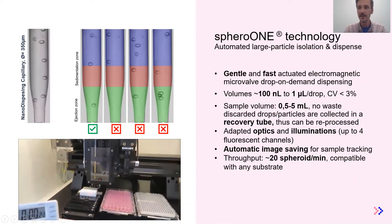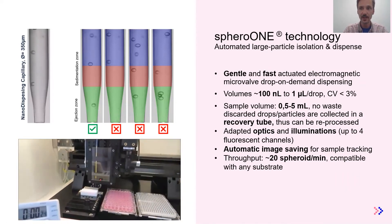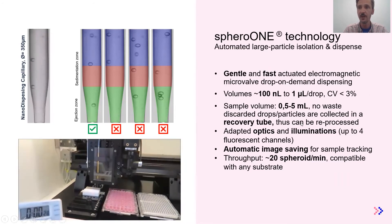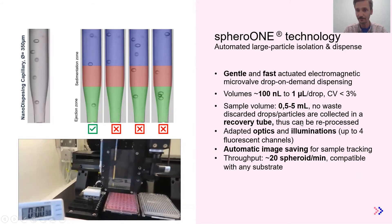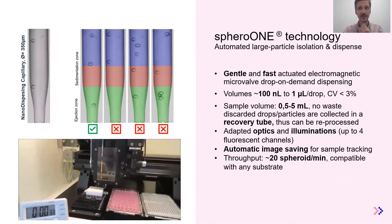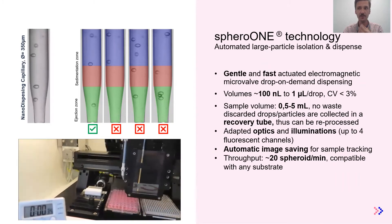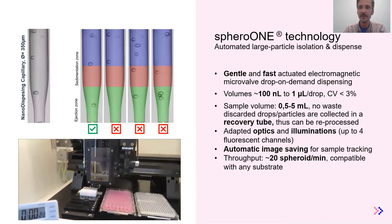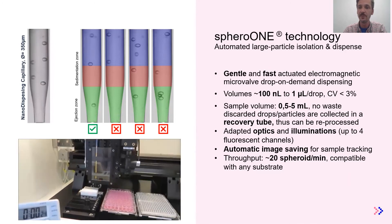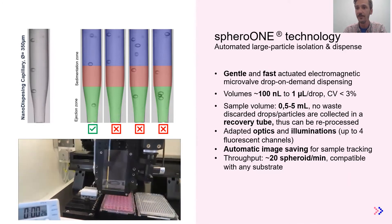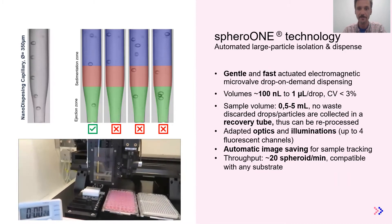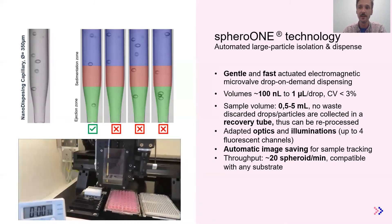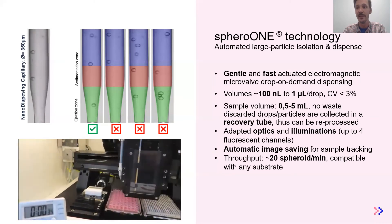On top of that, the system is capable of aspirating large particles from 0.5 mm. The optics and illuminations are adapted to larger objects. The system is potentially equipped with up to four different fluorescent channels for sorting, and the typical throughput for large particle isolation is roughly 20 per minute.